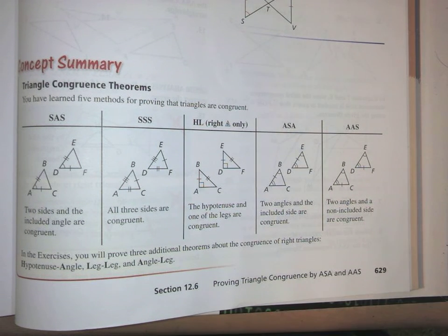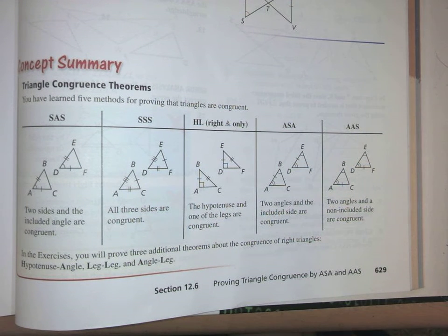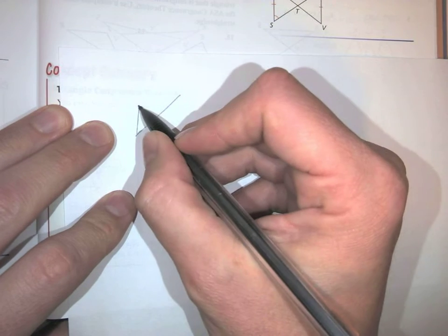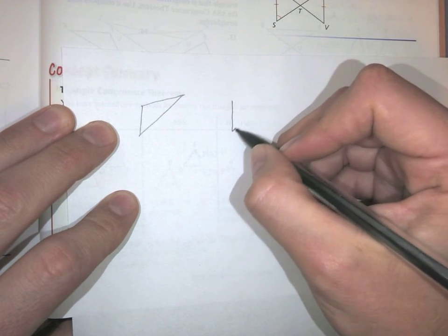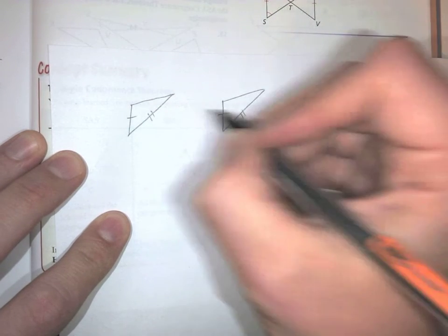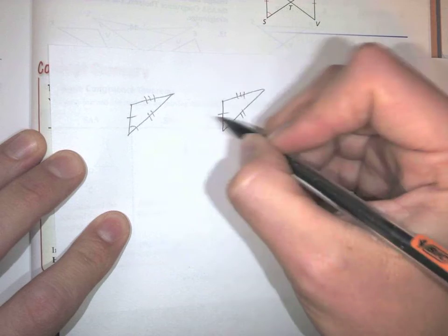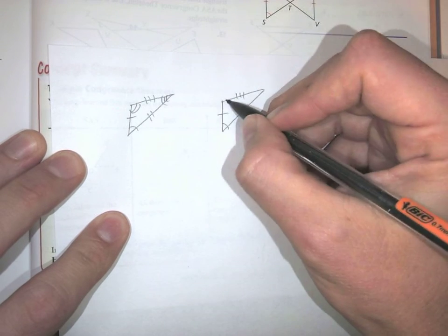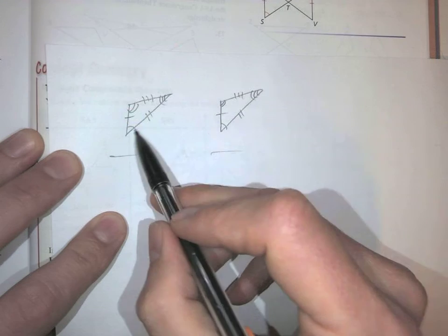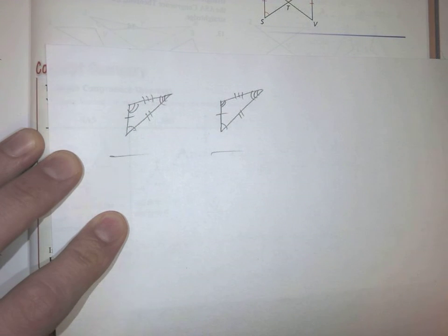So what I wanted to talk about is triangle congruence theorems. Let's talk about congruent triangles for a second. Two triangles are congruent if they have three congruent sides and three congruent angles. We talked about congruent figures — if two figures are congruent, there's a transformation that maps all the pieces onto all the other pieces. All three sides will be congruent to each other, and all three angles will have a corresponding congruent angle.